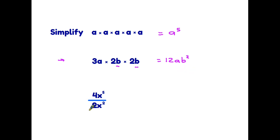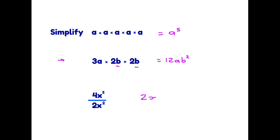Our third example is a division: we have 4x to the power 5 divided by 2x squared. The first thing we do is look at the numbers — 4 divided by 2 is 2. Then for x to the power 5 divided by x squared, the rule is that when dividing we subtract the indices, so 5 minus 2 is 3, giving us 2x to the power 3.